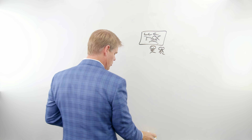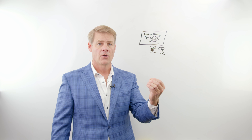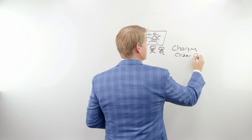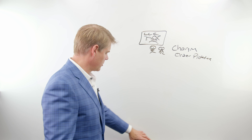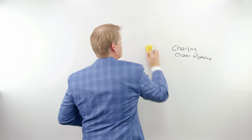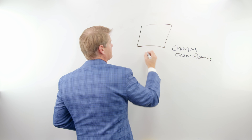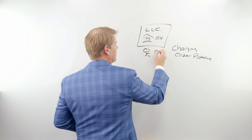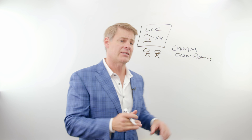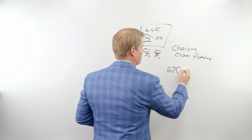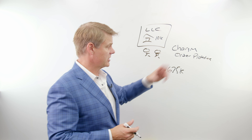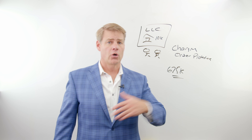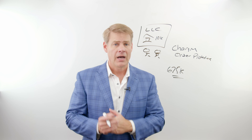We wanna make sure that whatever we're setting up, we wouldn't lose it in the event of a lawsuit. The way you ensure that your assets held inside of the LLC are gonna be protected is by making sure you have what are referred to as charging order protections. So let's say I have an LLC set up, it has a rental property in there, it has $10,000 in cash collected in rents, and I'm involved in a lawsuit. A judgment is entered against me for $675,000 — so I owe the creditor, the plaintiff, $675,000. Here's what that plaintiff is gonna do.